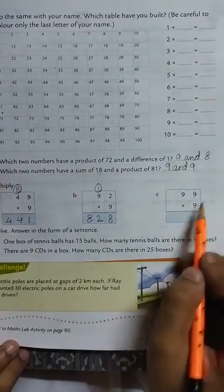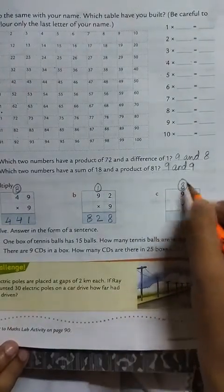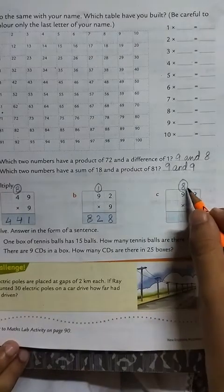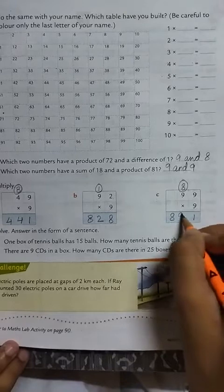Question C, 99 into 9. 9 nines are 81. 9 nines are 81. 81 plus 8 is 89. So the answer is 891.